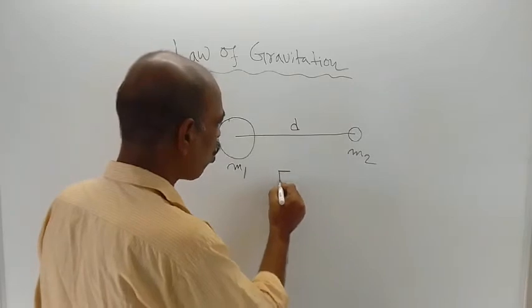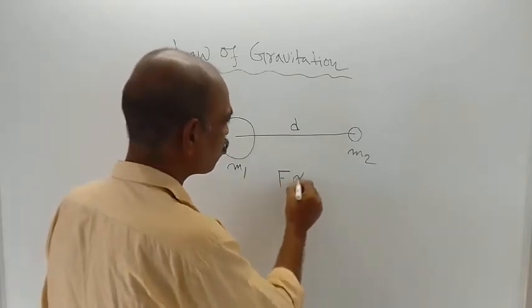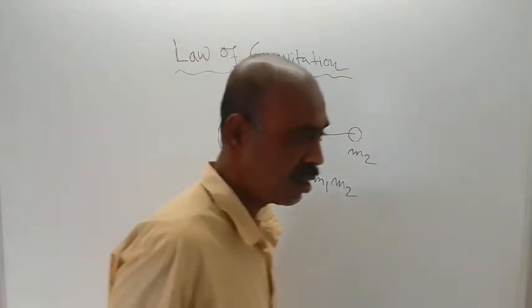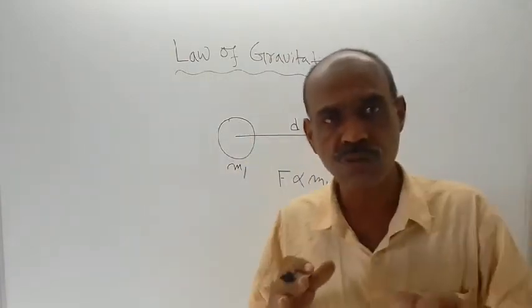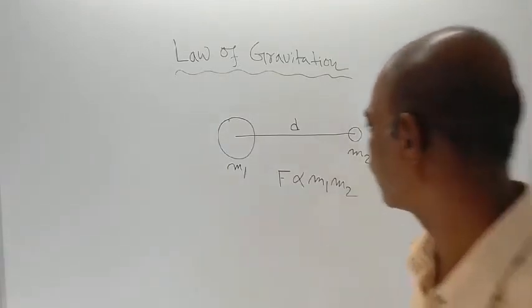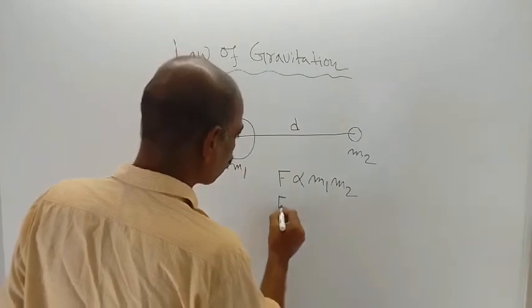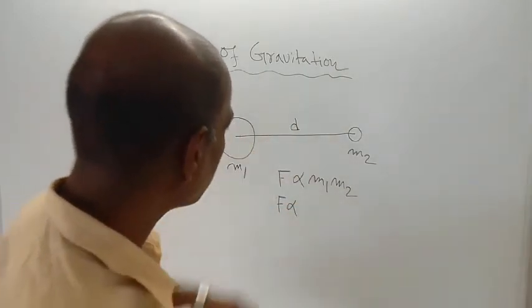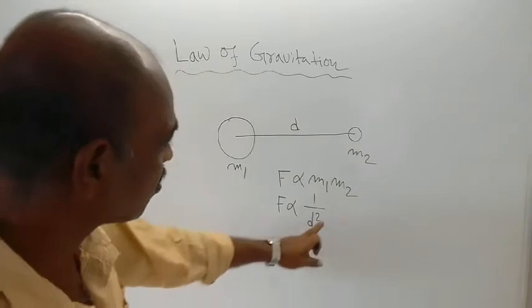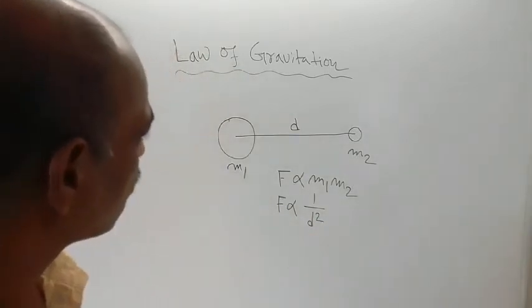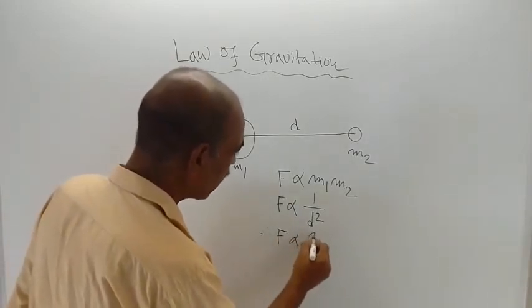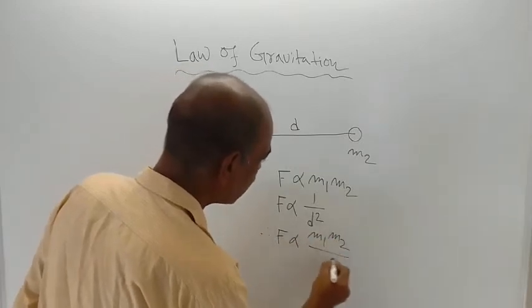According to the law of gravitation, F is proportional to M1 times M2, because force is proportional to the product of their masses. Also, F is inversely proportional to the square of the distance, so F is proportional to 1 by D squared. Combining these two, F is proportional to M1 times M2 divided by D squared.